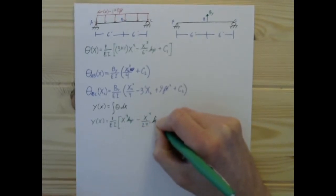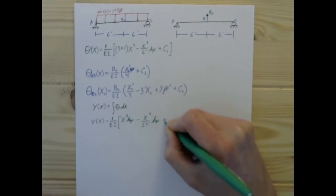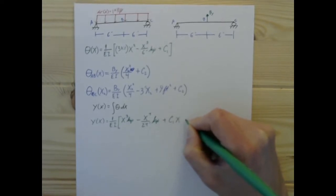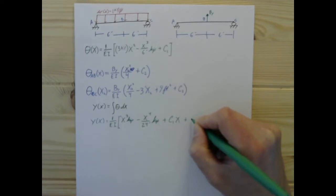plus C1 times x plus C, what are we going on as far as constants of integration go? I think 5? C5? Does that make sense? I think it's 4.